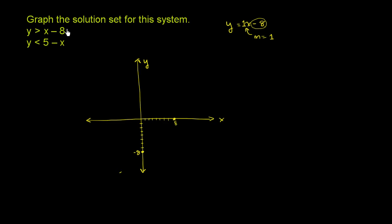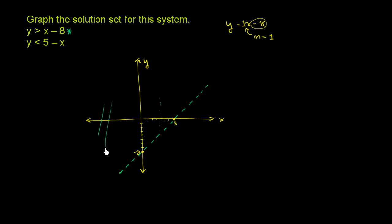Let me use a new color for this inequality. That is the boundary line, and this says y is greater than x minus 8. You pick an x, and x minus 8 gives a point on the boundary line, and y is greater than that. So it's all the y values above the line for any given x — this region above the line.